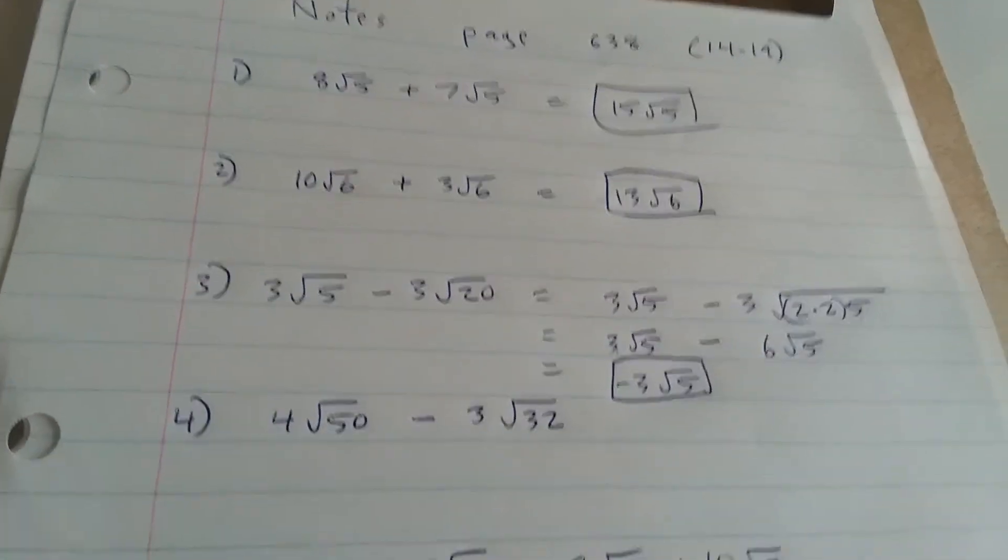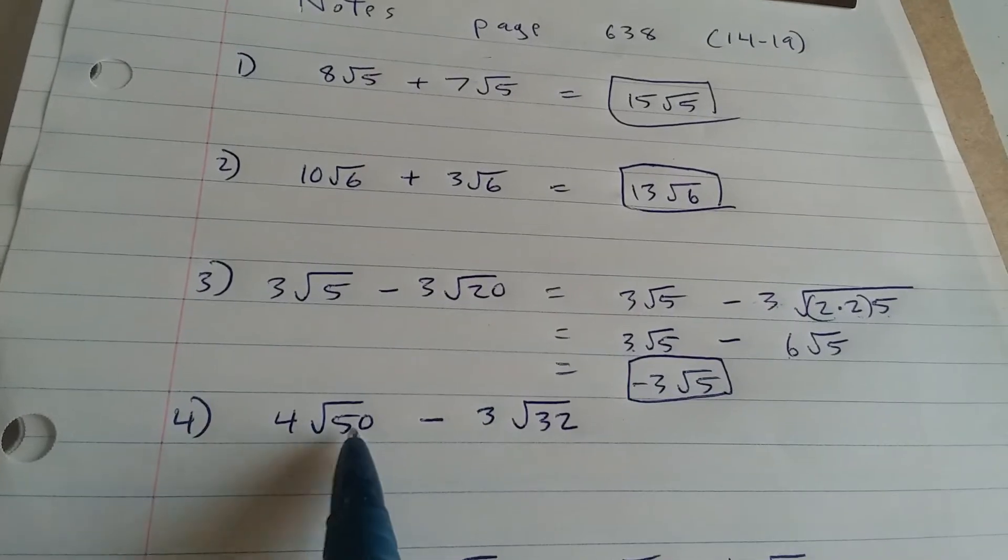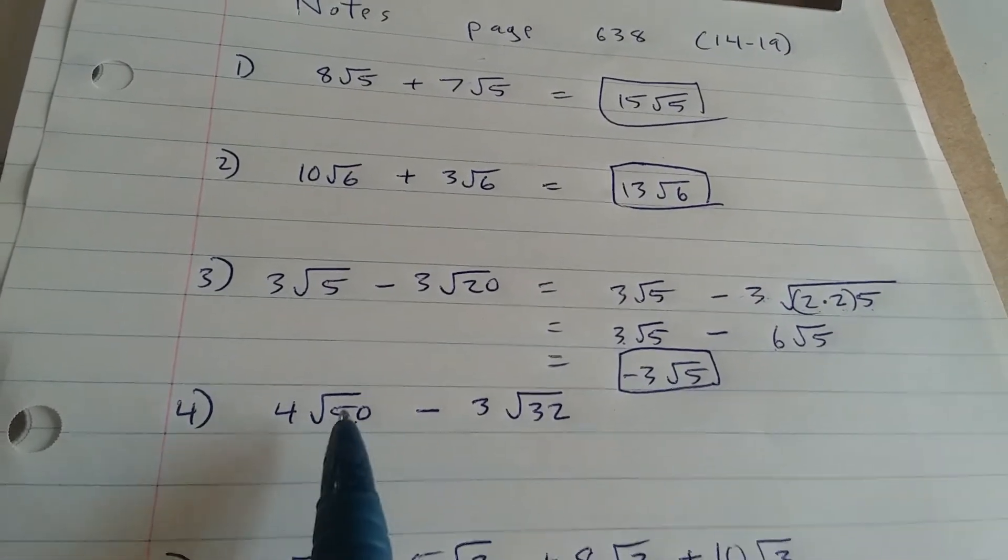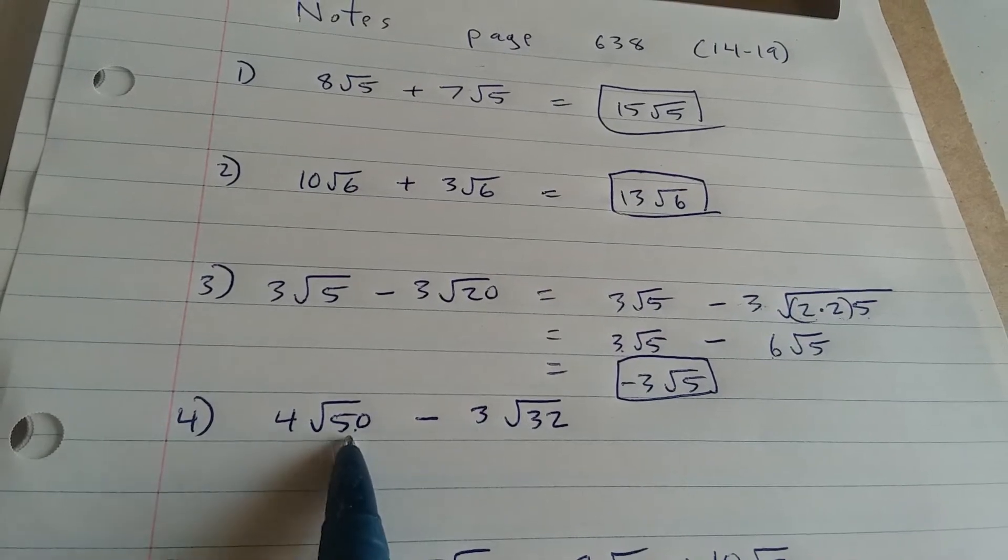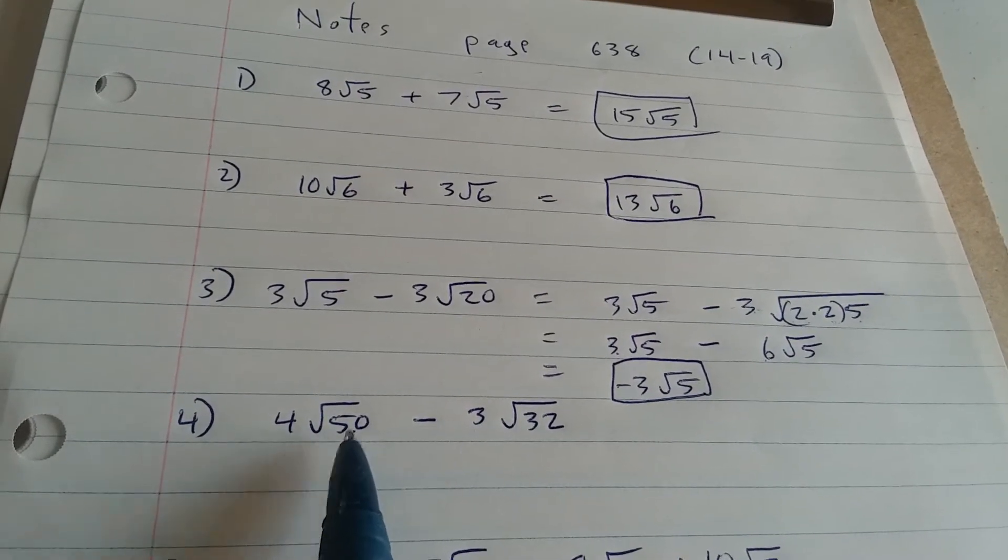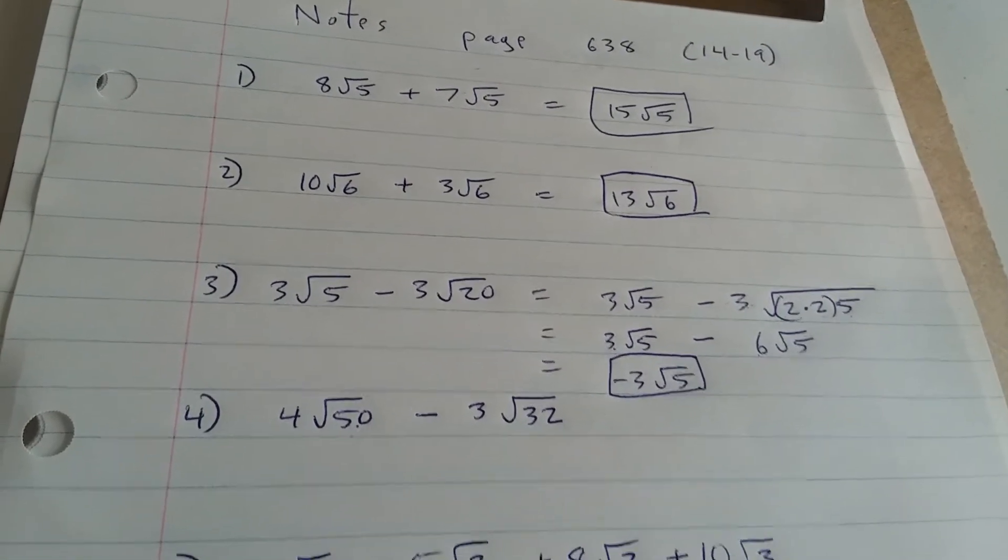Next example here, same process. We've got to make that number under the root match. We can rewrite 50 as 5 times 5 times 2. 5 times 5 is 25. 25 times 2 is 50.